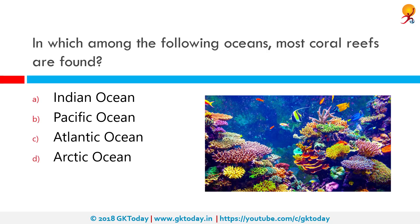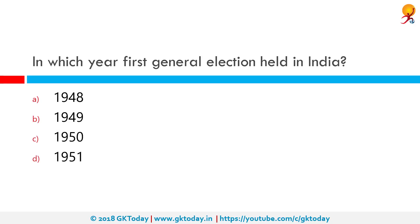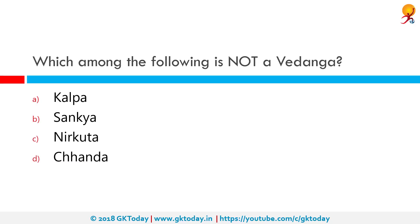In which among the following oceans are most coral reefs found? The correct answer is the Pacific Ocean. In which year were the first general elections held in India? The first general elections were held between October 25th, 1951 and March 27th, 1952.